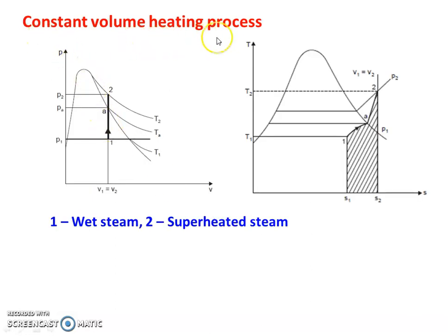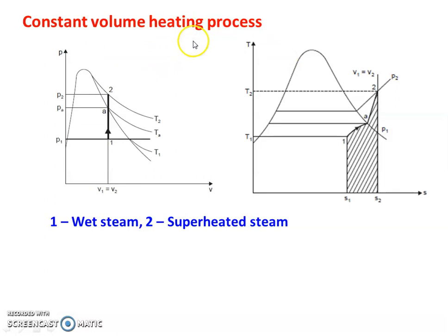First, the constant volume heating process. In a heating process, when heat is added, the quality of the steam will increase — from wet steam, to dry steam, to superheated steam — depending on the amount of heat transfer.